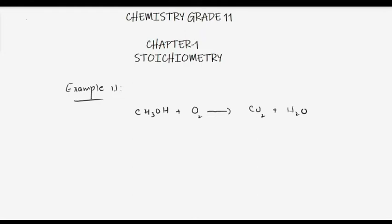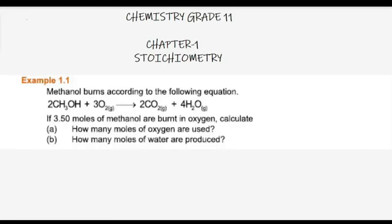Of course you have to balance the equation. To balance it, we write the coefficients: 2 in front of methanol, 3 in front of oxygen, 2 in front of carbon dioxide, and 4 in front of water.